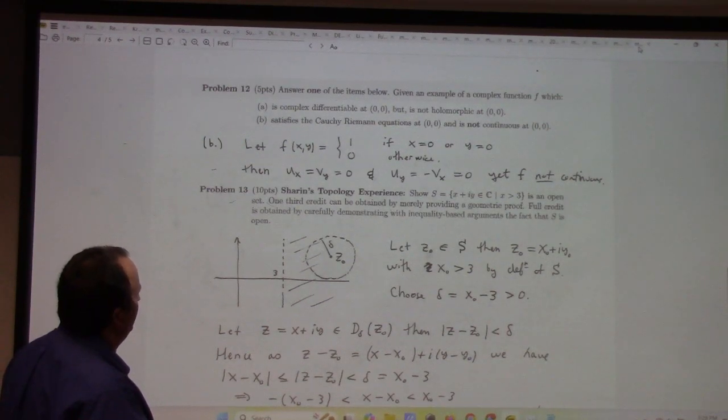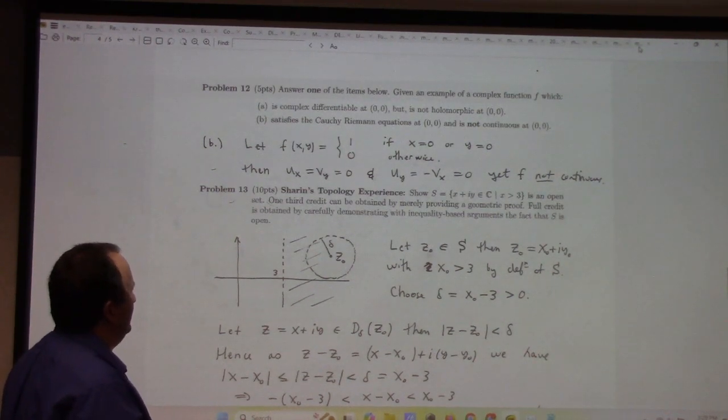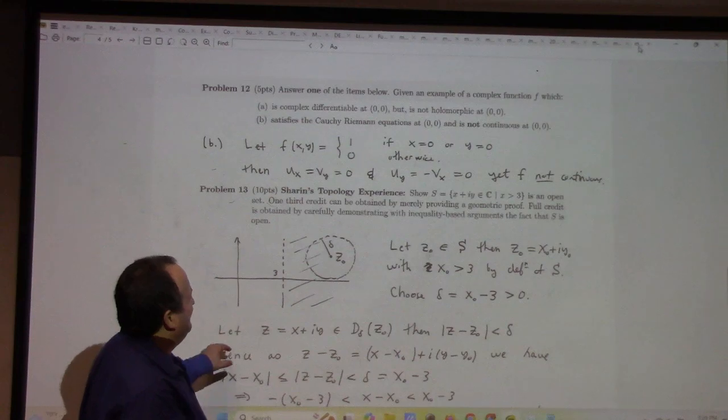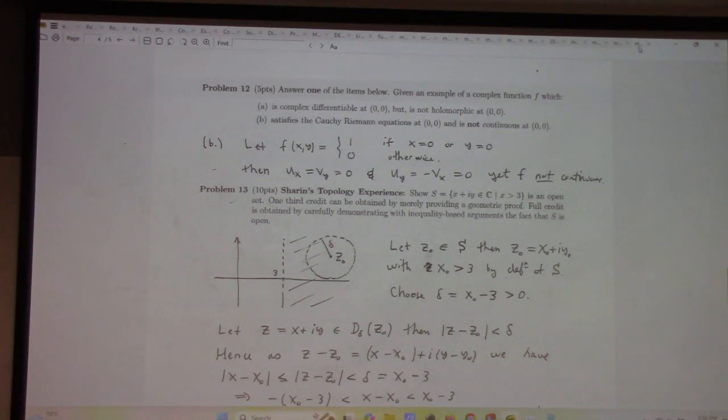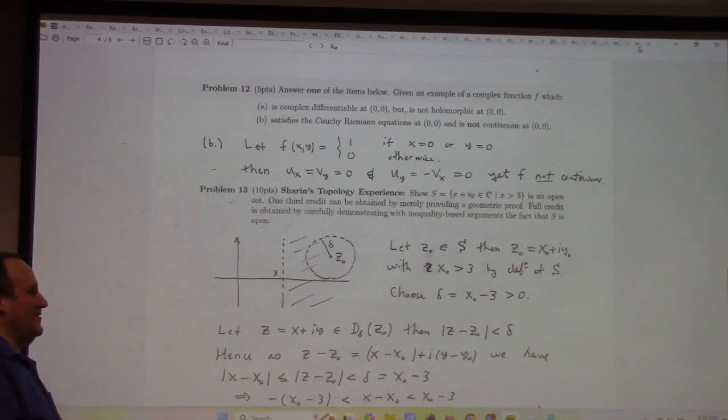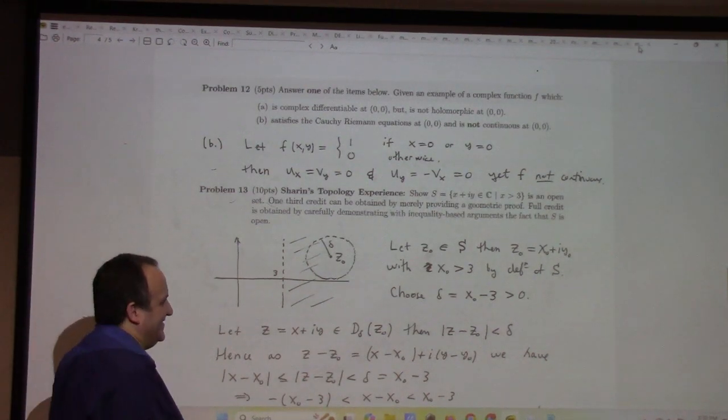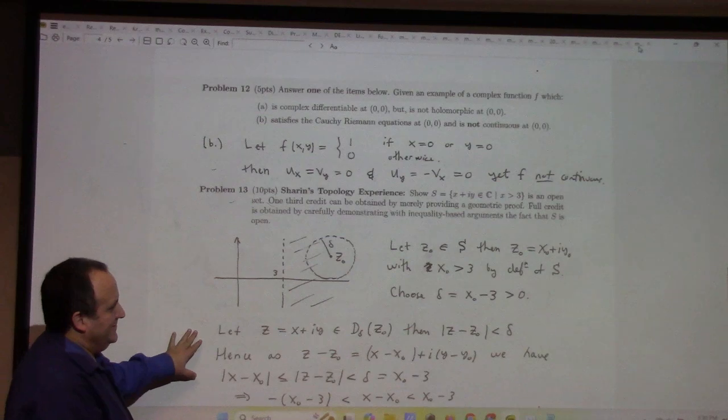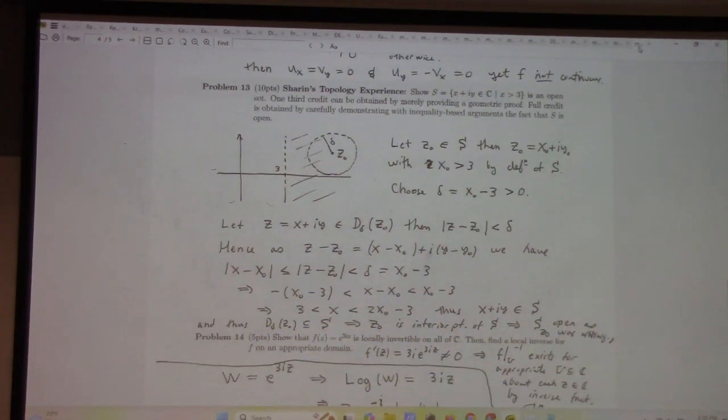A, complex differentiable 0, 0, but not holomorphic 0, 0. Or B, satisfies Cauchy-Riemann equations 0, 0, but it's not continuous at 0, 0. So, I chose B. Sharon's topology experience. I named this after Sharon. Her name was... Well, anyway. I'm never going to have kids. And then Sprint was like, she had a kid? And I was like, ha-ha. It's good. It's about time. Anyway, she's married. So, important. I mean, you never know. Anyway, so we did have a problem like that. You remember, to prove this, prove a half plane's open by showing the interior point.